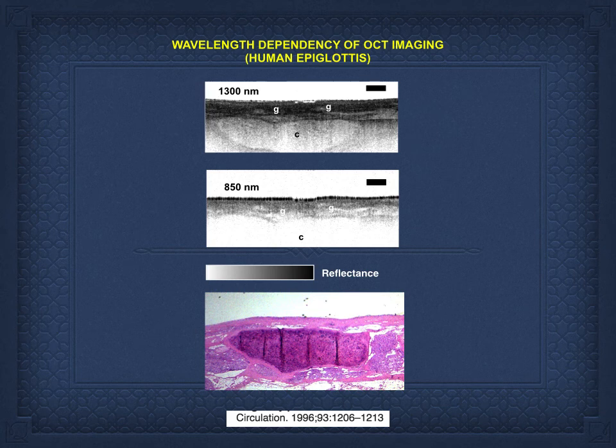The first non-scattering tissue paper, these images were in. You can see imaging in epiglottis with the histology on the bottom. At 1300 nanometers, you can see through the elastic cartilage where at 850 nanometers the penetration isn't even 500 microns.